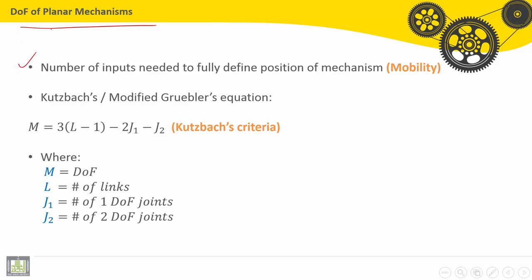First of all, it is the number of inputs needed to fully define position of mechanism. It is called mobility. Now, with Kutzbach's or Modified Gruebler's Equation, it is the following: M equals 3(L-1) minus 2J1 minus J2. This is called Kutzbach's criteria.